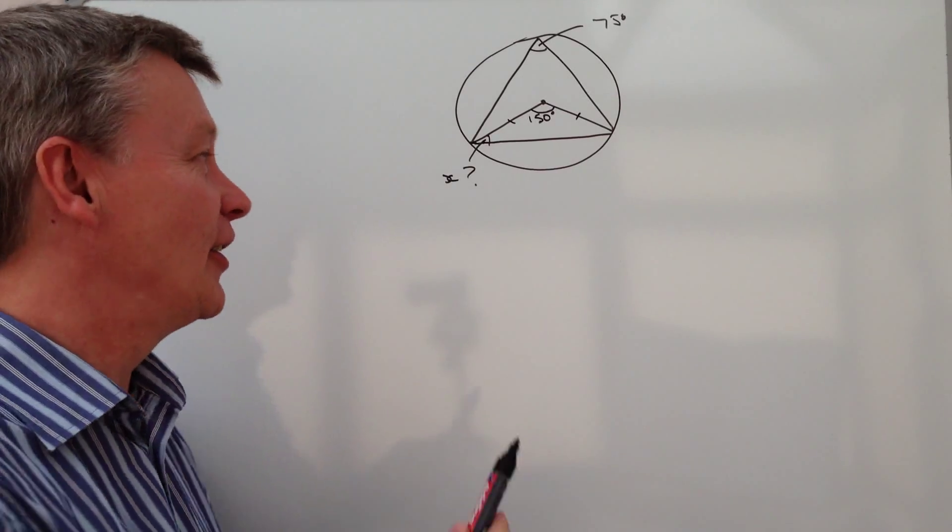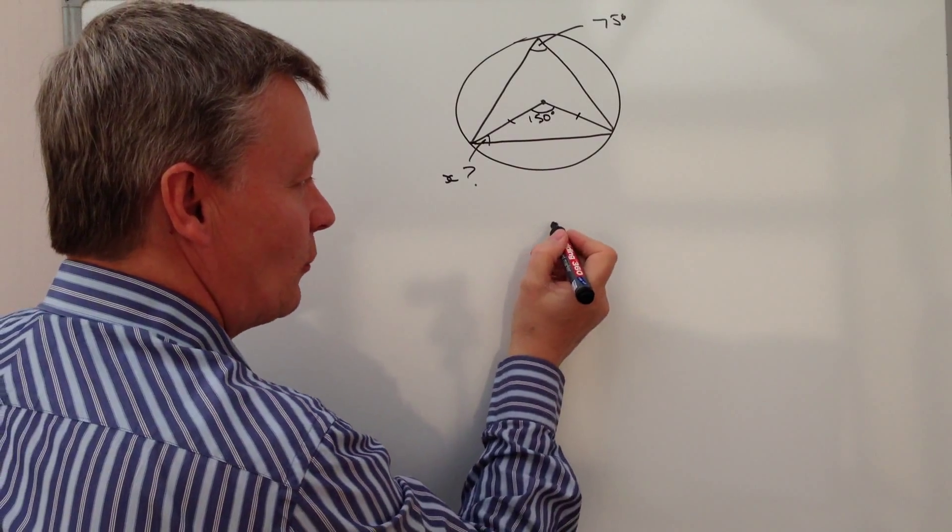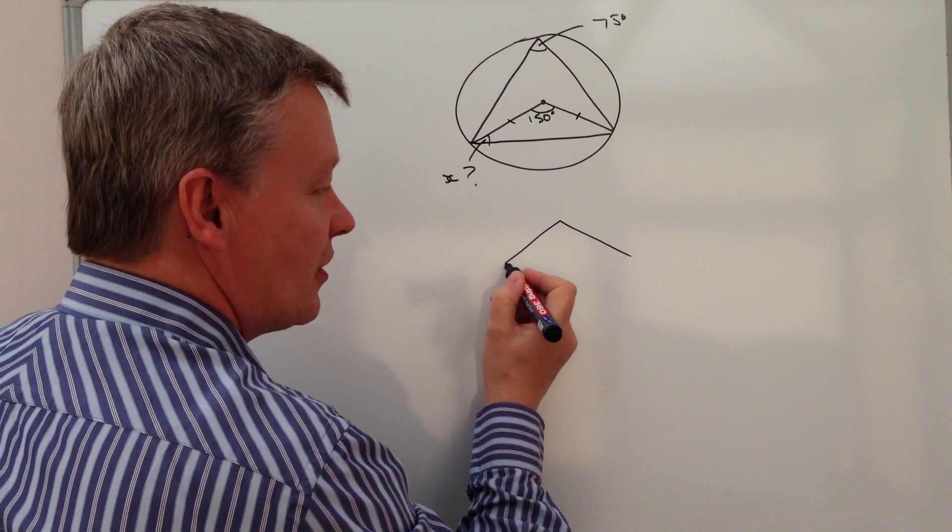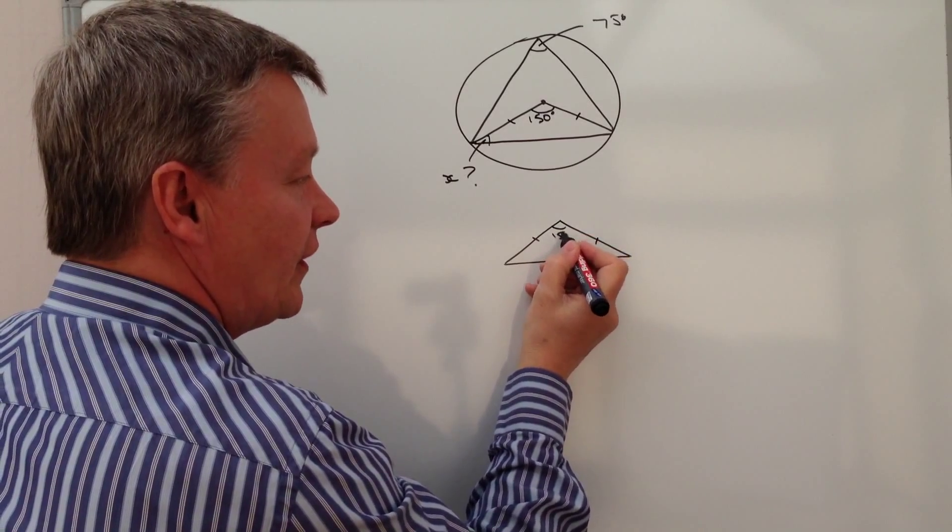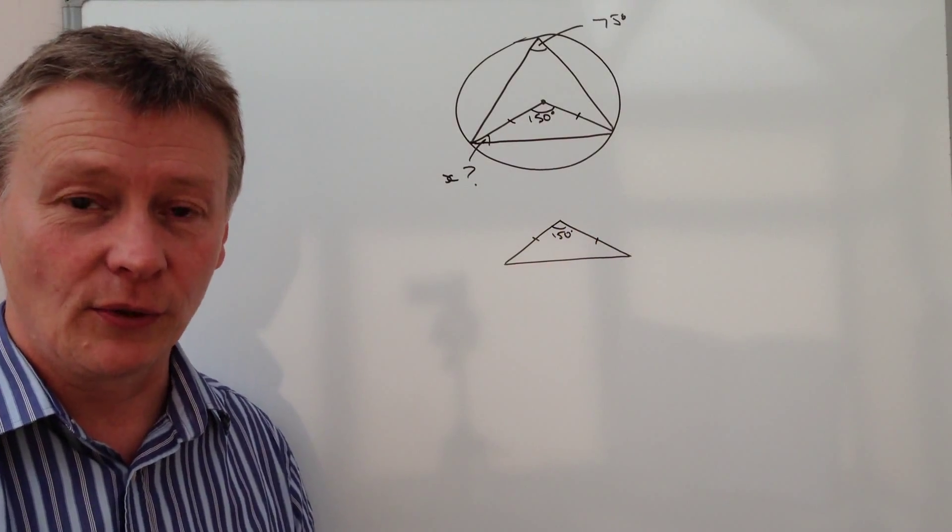So hopefully now that's starting to become a little bit more familiar, and you'll be able to now work out the value of this X, because actually what we've got now is just a simple isosceles triangle, where this is 150 degrees, and then these two sides are equal.